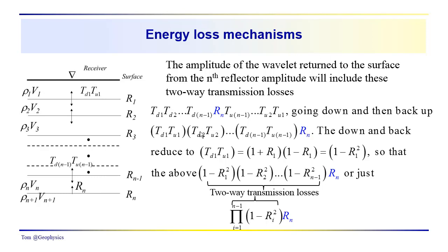In this next expression here, we've just paired the down and up terms together, so we have TD1 times TU1, TD2 times TU2, and so on. This represents the two-way transmission loss associated with the reflection from the nth interface.